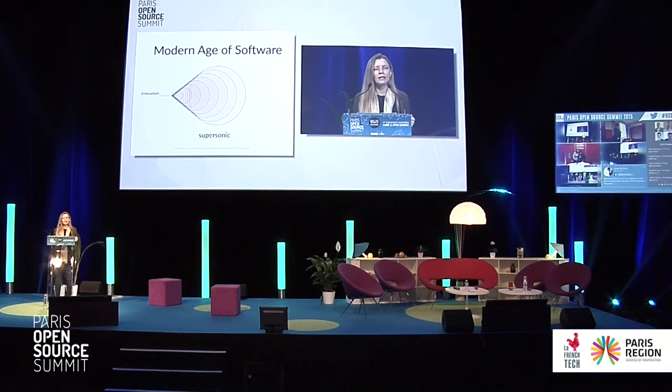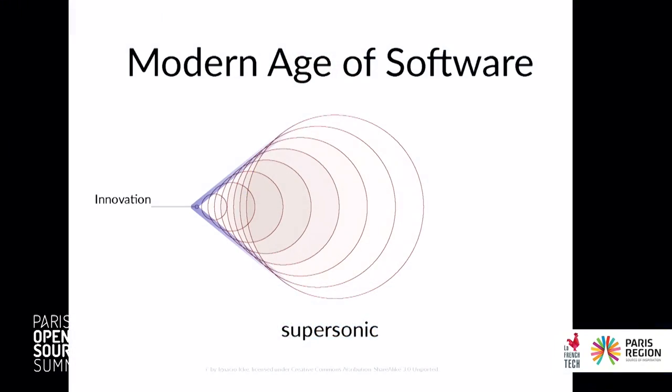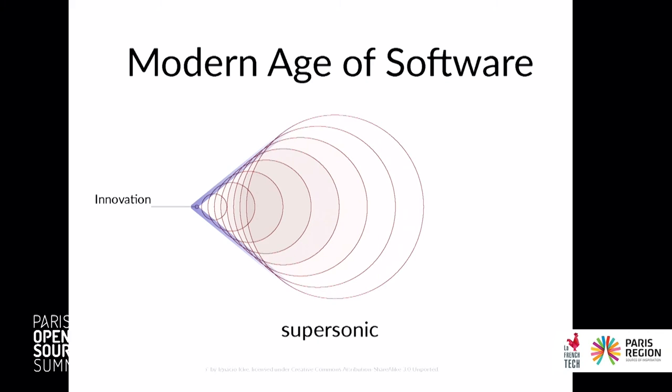Part of it was that the software had to get to a level of maturity where it was completely usable in production, and a growing acceptance that this software had been around a while and people trusted it. Part of it was also the economic crash around the year 2000 — suddenly startups couldn't afford Oracle and Microsoft licenses. In the constrained economy, they really had to look at alternatives. At that point, Web 2.0 was built entirely on the back of open source projects.